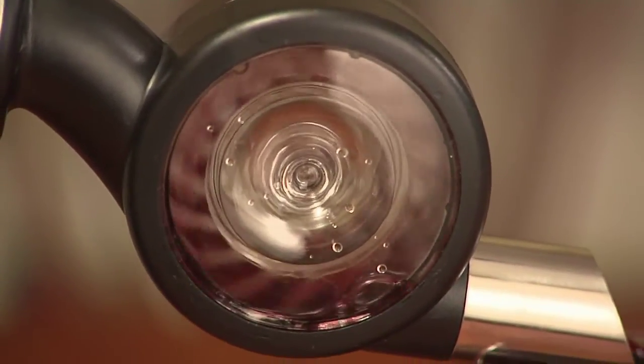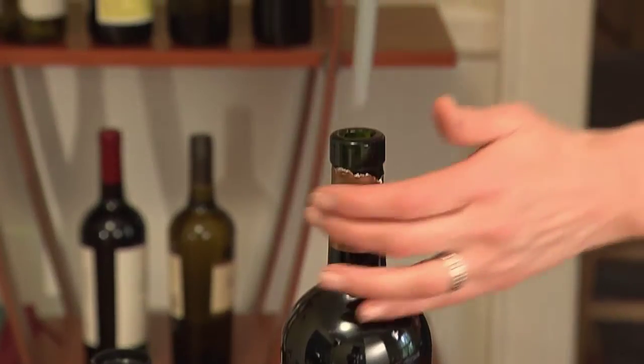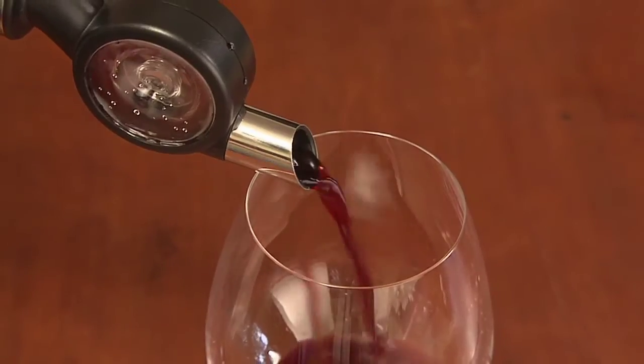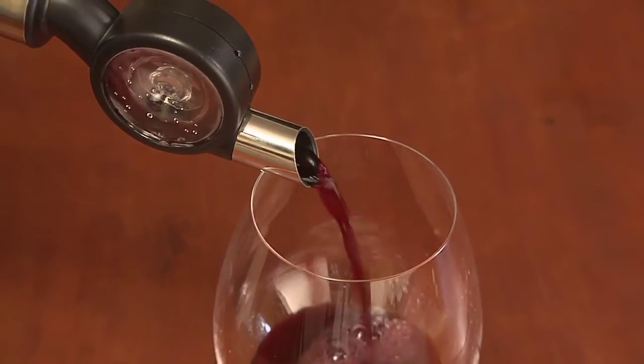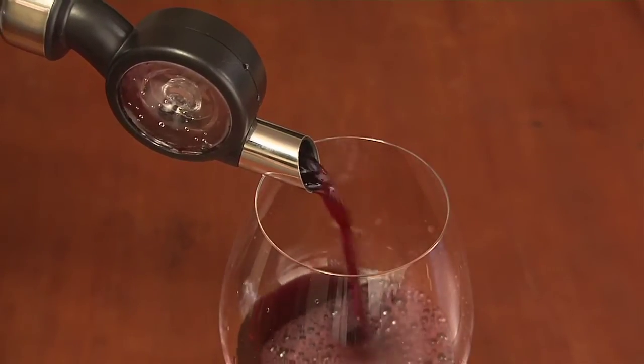The key feature is the aeration device in the middle, which is like a little turbo fan. Simply place the Venerator in the wine bottle's mouth, and it infuses the wine with air in seconds while you pour, cutting down on the time it normally takes to aerate your wine, about 15 minutes or more.